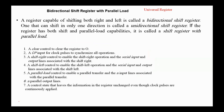Next, we move to the bidirectional shift register with parallel load, also known as the universal register. A register capable of shifting both right and left is called a bidirectional shift register, while one that can shift in only one direction is called a unidirectional shift register. If the register has both shift and parallel load capabilities, it is called a shift register with parallel load. This type is called a universal register since it has multiple control modes — for example, clear, shift left, shift right, and parallel load — and it performs the required operation depending on the select controls.